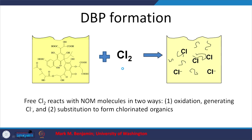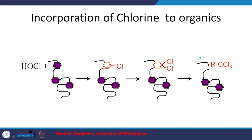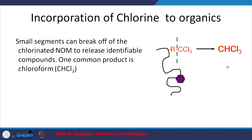So what happens when we add Cl2? It can lead to oxidation and the byproduct will be Cl minus, which is fine, or it can lead to substitution to form chlorinated organics — called disinfection byproducts. The oxidation pathway is not toxic to us at those levels, but substitution to form chlorinated organics is when we have issues. With HOCl or Cl2 reacting with aromatic rings, we get substitution of 1, 2, or 3 Cl atoms, and small segments can break off — one common product is CHCl3, chloroform.